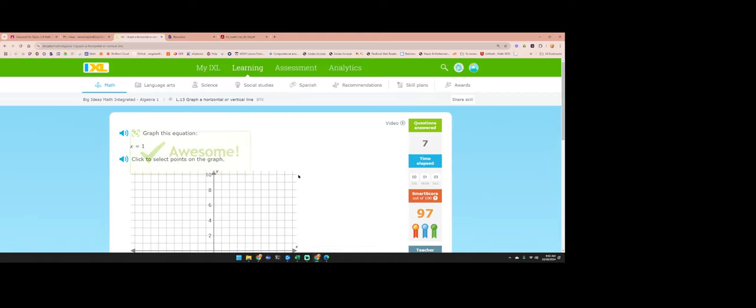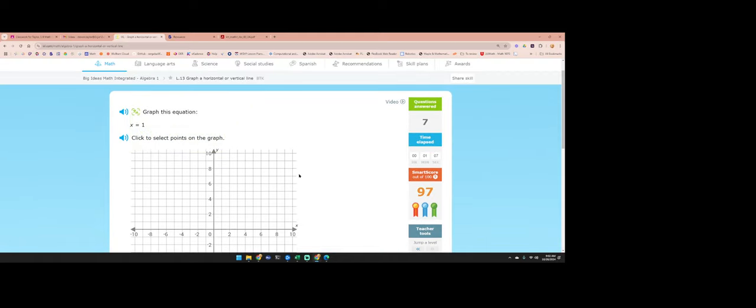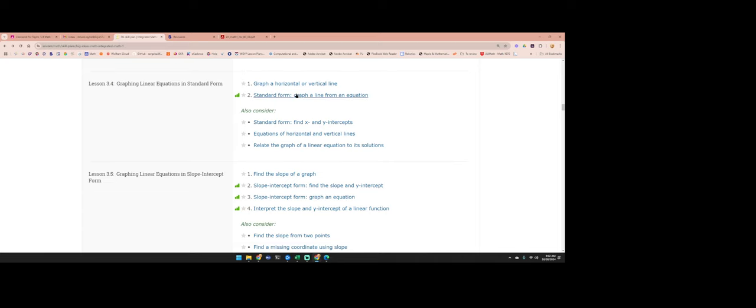So that first one is really easy. You're just graphing horizontal and vertical lines. X's mean you have a vertical line. Y's mean you have a horizontal line.